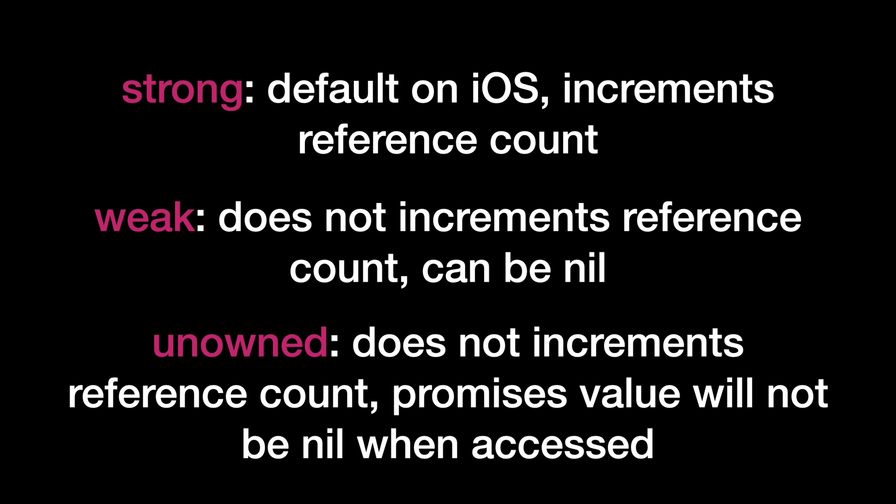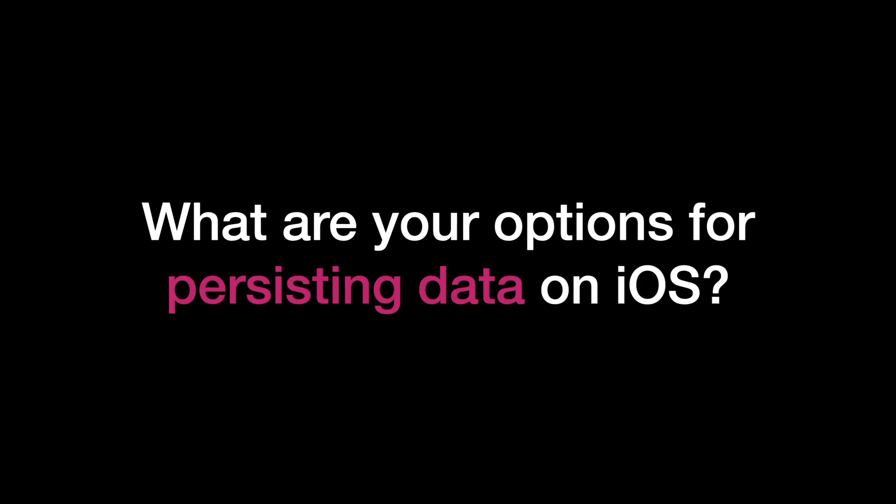In simple terms: strong is the default in iOS and increments the reference count of whatever object it refers to. Weak does not increment the reference count and assumes the referenced object can be nil at some point during execution. Unowned also does not increment the reference count, but promises that the value it references will never be nil.